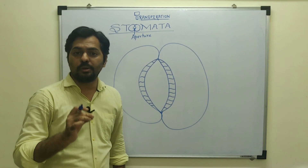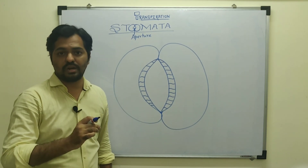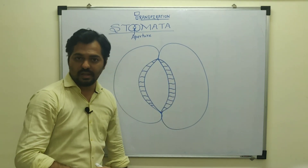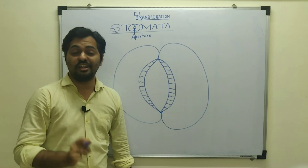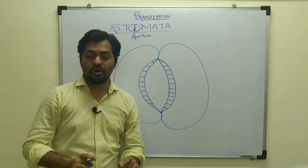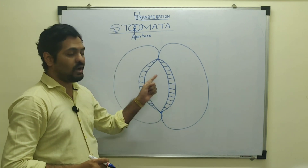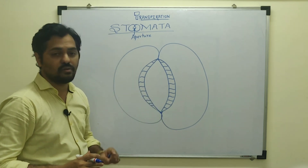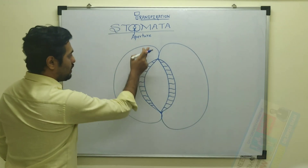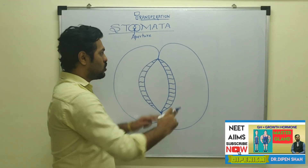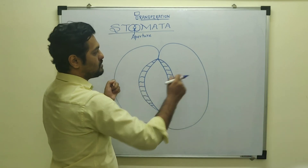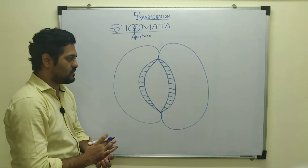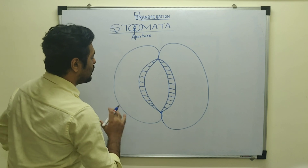The first important key point is that the opening and closure of stomata depends on these wall properties. The outer cell wall is comparatively thin and elastic, which helps in the process of opening of stomata. We will discuss opening and closure of stomata in the next video; now we are focused only on the structure of the guard cells.